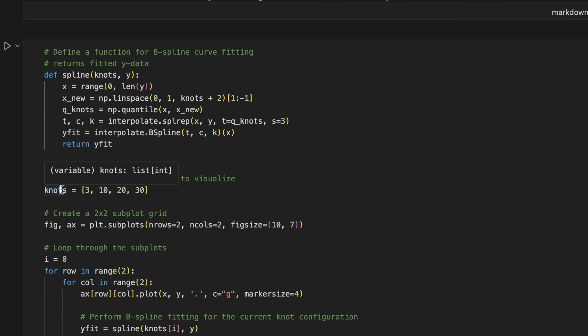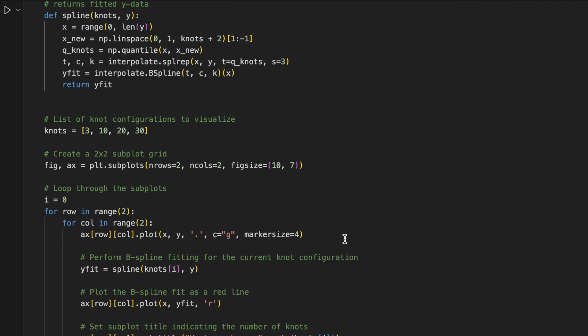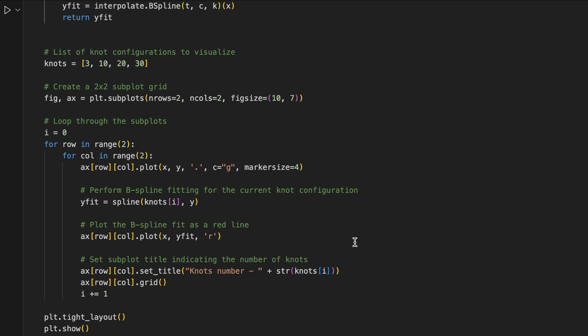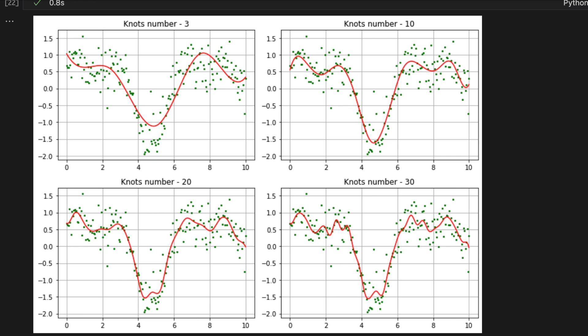Then we'll define the list of nodes configuration to visualize. Then we create 2x2 subplots. Then we iterate through the subplots. And here we will calculate the b-spline fitting for the current nodes configuration and visualize it in a plot. Now I run the code. Here is the output. The first graph shows the number of nodes is 3. The second one is 10 and 20 and 30.